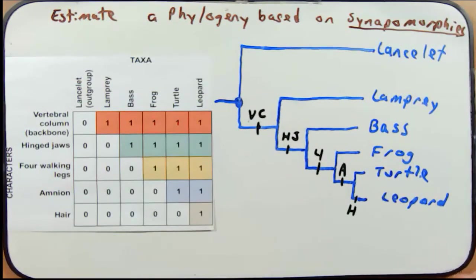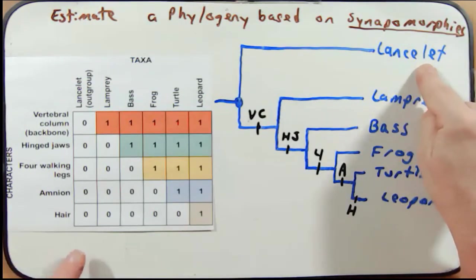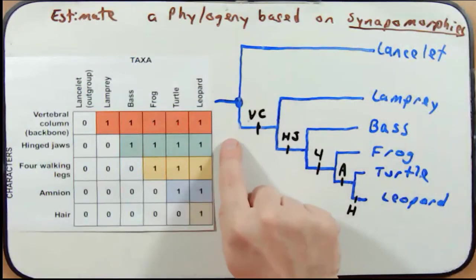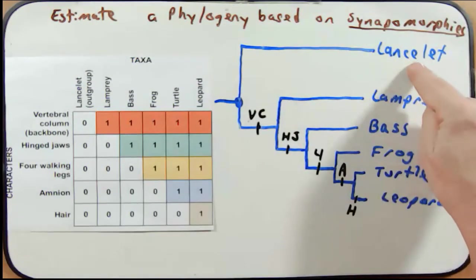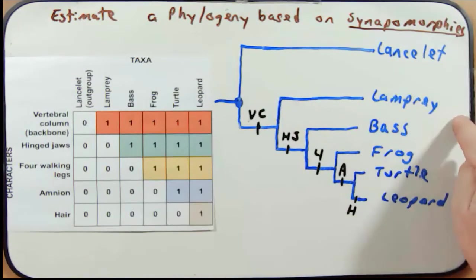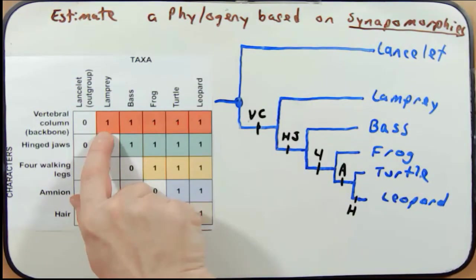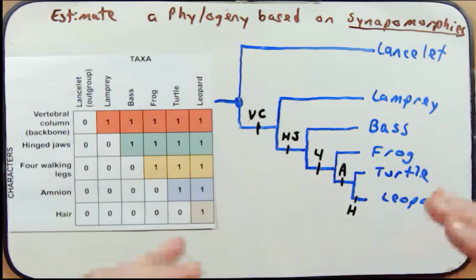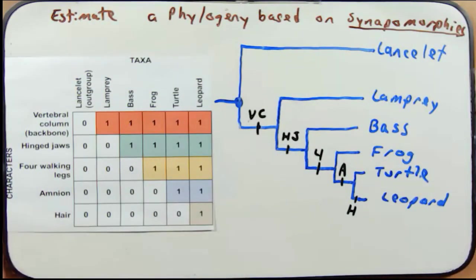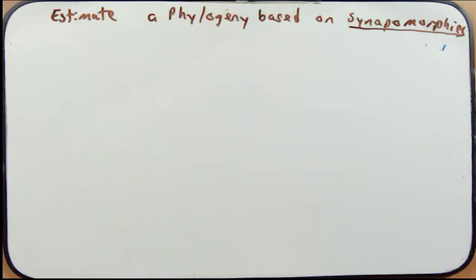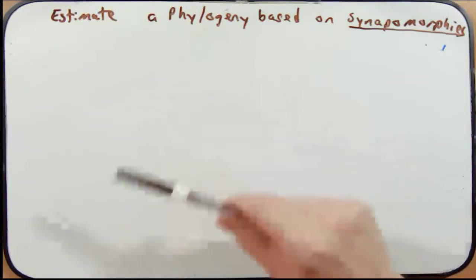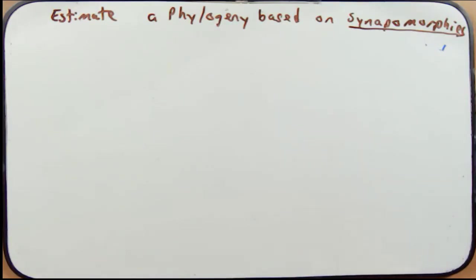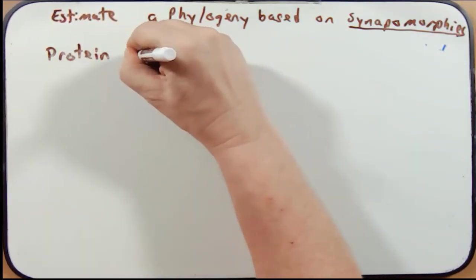To review: I started with the outgroup, the lancelet, and then identified what made each subsequent organism different — the lamprey had a vertebral column, the bass a hinged jaw, and so on, building downward. If you get one of these on the exam based on morphology, it will not be more complicated than this. We can estimate phylogenies using morphological synapomorphies, but we can also do it using protein or DNA sequence.